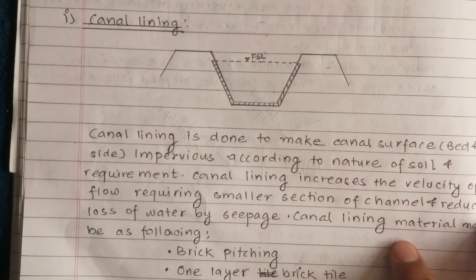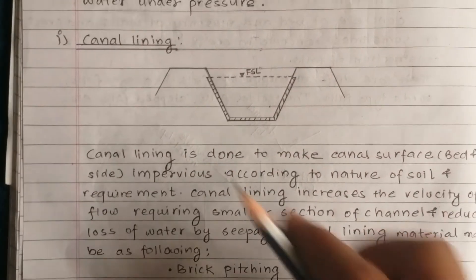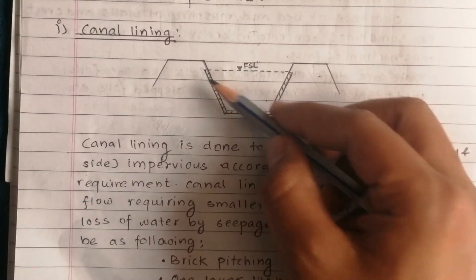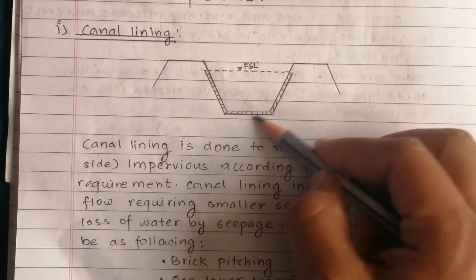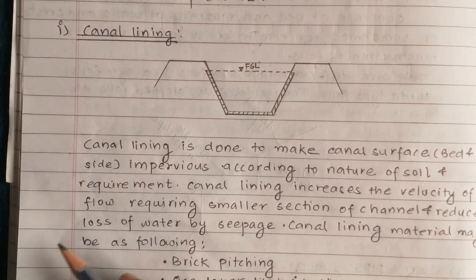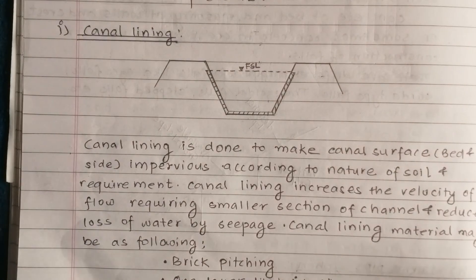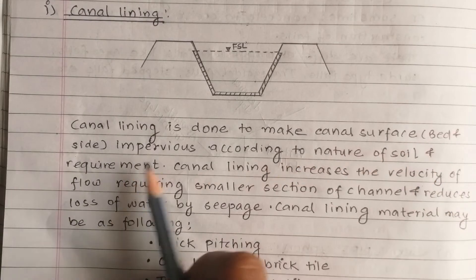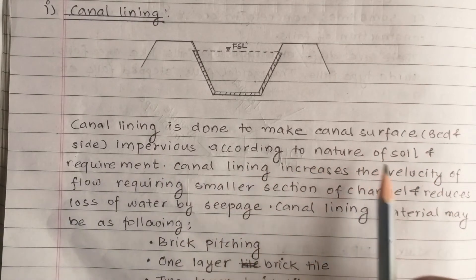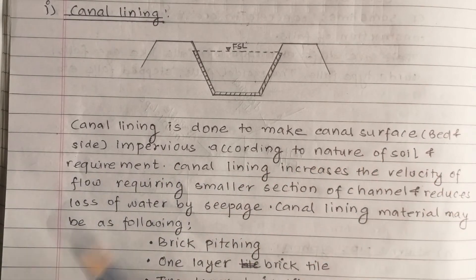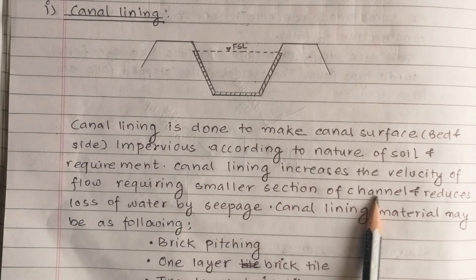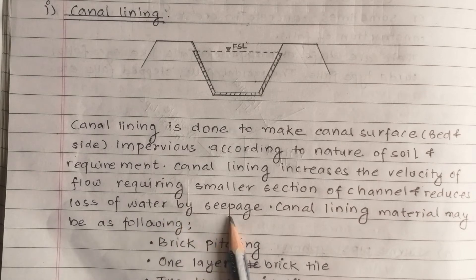We have canal lining. The canal lining is done to make the bed and sides impervious according to the nature of the soil and the requirement. Canal lining increases the velocity of flow, requiring a smaller section of channel, and reduces loss of water by seepage.